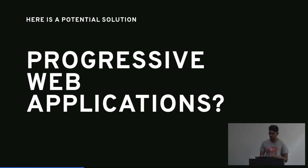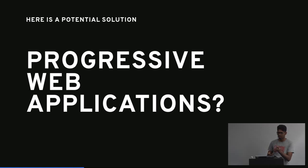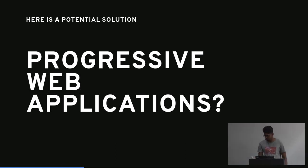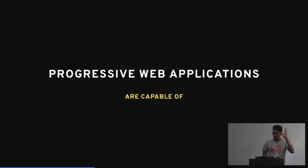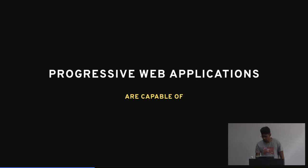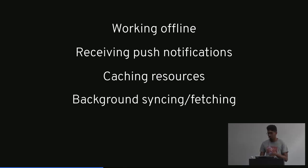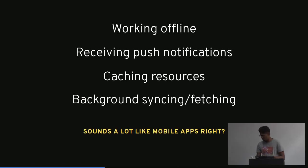Here's a potential solution: Progressive Web Applications. There's a lot of hype about it - people are spitting up service workers or pre-built ones where you put your site into a URL and it'll generate a service worker. But in most cases those pre-built packages don't really work and there's no room to customize. Progressive Web Applications are capable of working offline, receiving push notifications, caching resources, and background syncing and fetching. They sound a lot like what mobile apps already provide.